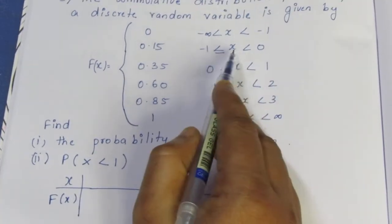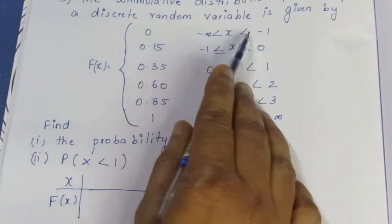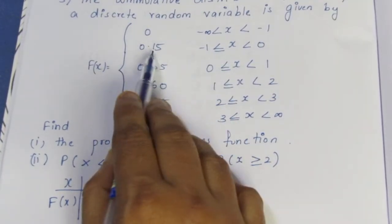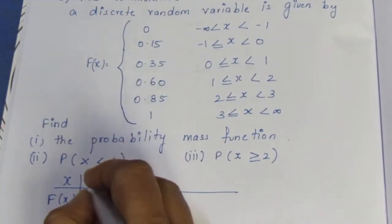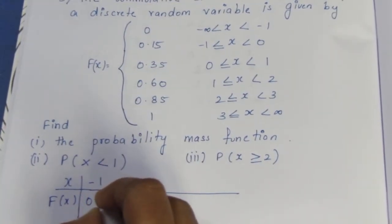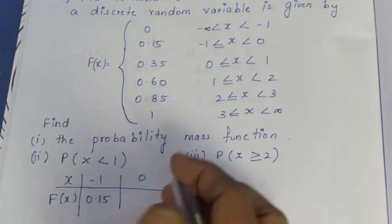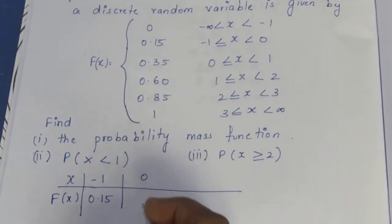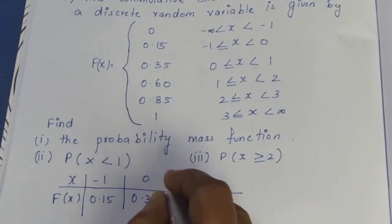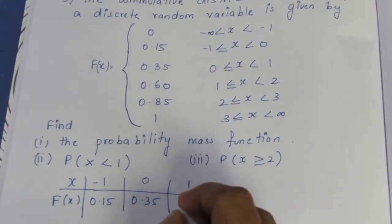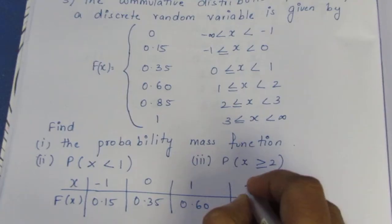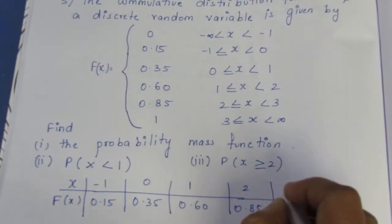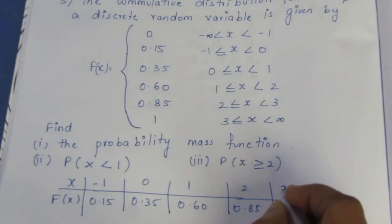We need to identify where values are equal versus not equal. For x = -1, F(x) = 0.15. For x = 0, F(x) = 0.35. For x = 1, F(x) = 0.60. For x = 2, F(x) = 0.85. For x = 3, F(x) = 1.